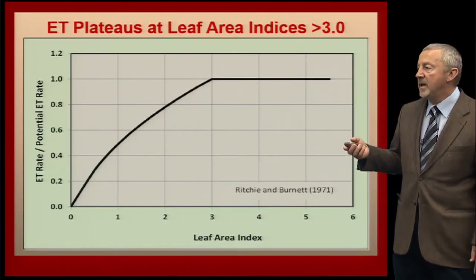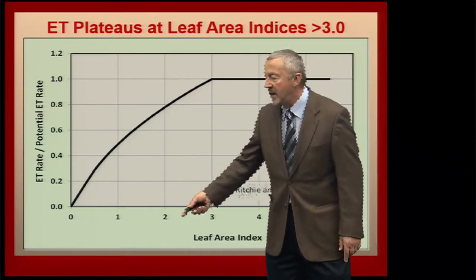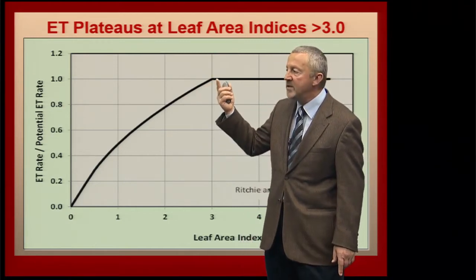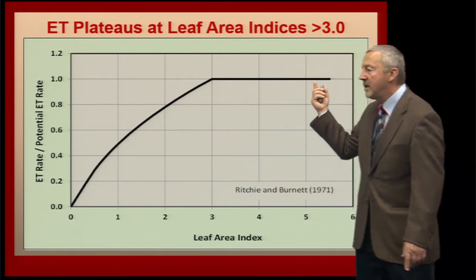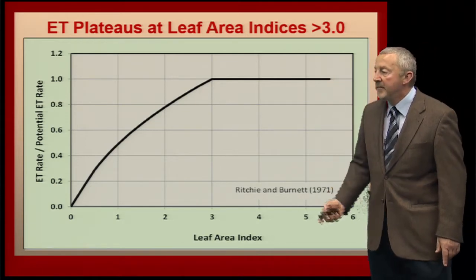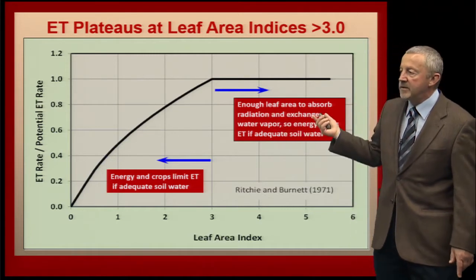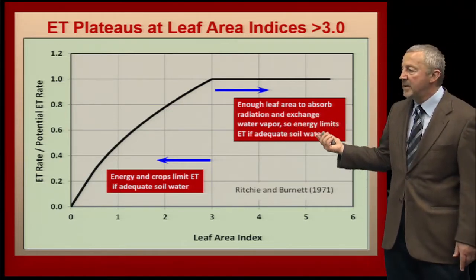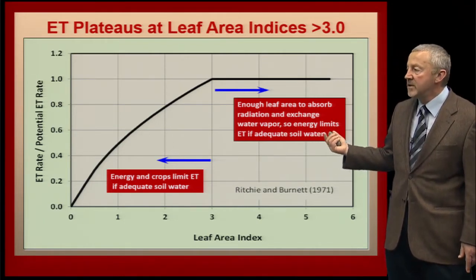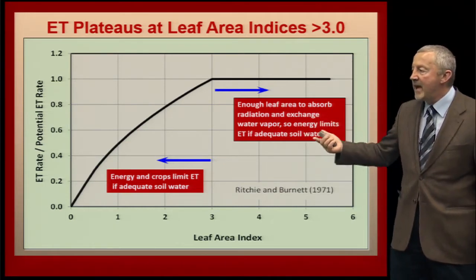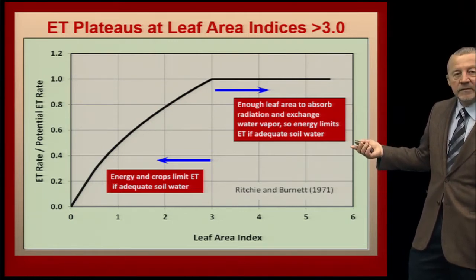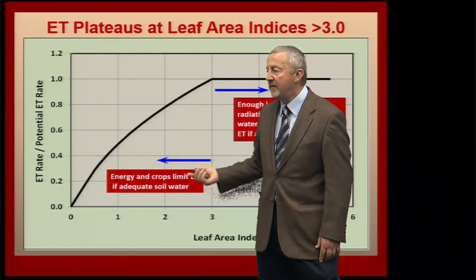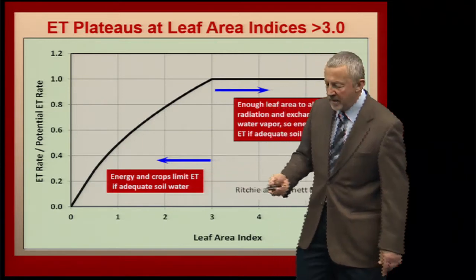As we look at the potential for ET and ET plateaus, with leaf area index on the horizontal axis, as this crop develops it's almost a linear effect in terms of leaf area addition, and we reach a plateau at a leaf area index of 3.0. Once we cross 3.0, we're going to be at full ET until the leaf starts to senesce at the end of the growing season. In this upper plateau, there's enough leaf area to absorb all the radiation and enough stomata to exchange water vapor with the atmosphere. As long as water is adequate for the plant to continue to transpire at that rate, it will. If we don't have adequate soil moisture, we'll see some reduction in ET. Earlier in the growing season, it's simply a lack of enough leaf area that limits ET — the energy is there, and the crop is what limits ET if we have adequate water.